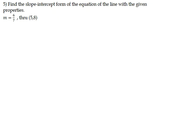We're looking at question number 5 today, and it's asking us to find the slope-intercept form of the equation of the line with the given properties. We are given that the slope of the line is m equal to 6 divided by 7, and the line goes through the point (5, 8).